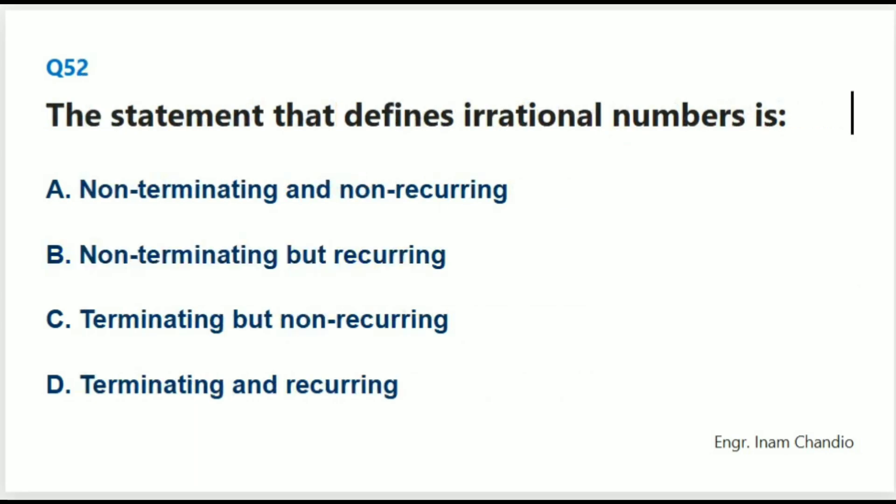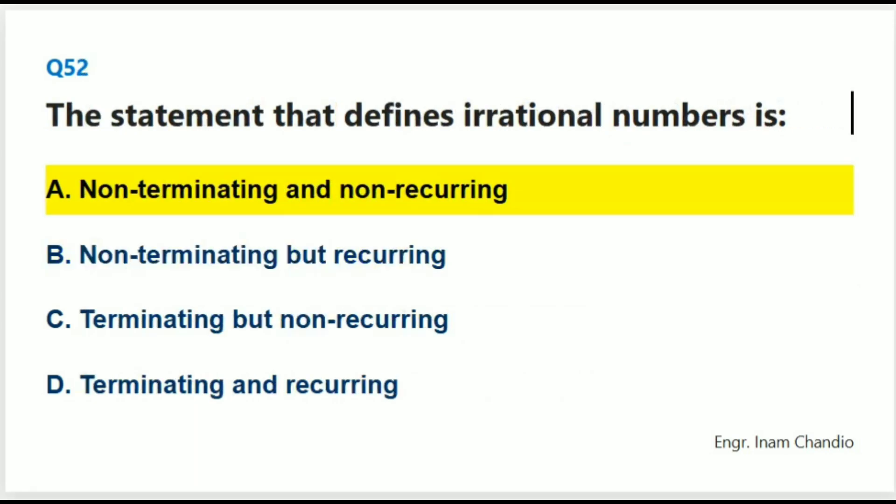The statement that defines irrational numbers is: The correct answer is A. Non-terminating and non-recurring.